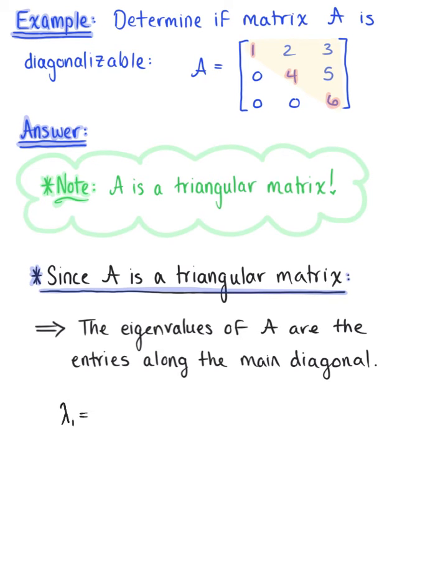Therefore, lambda sub 1 equals 1, lambda sub 2 equals 4, and lambda sub 3 equals 6. These are the eigenvalues of matrix A.